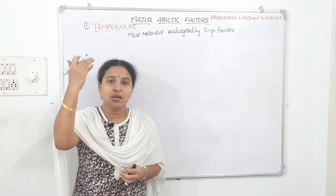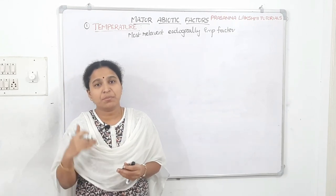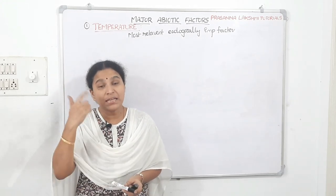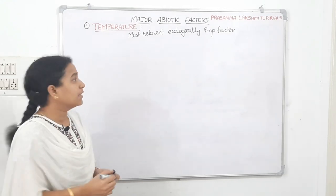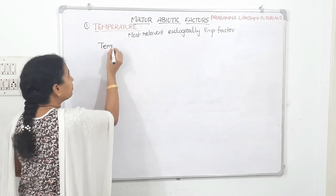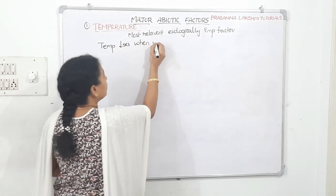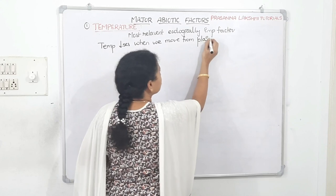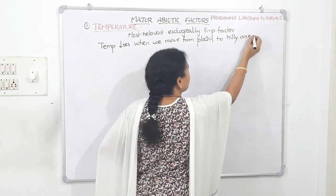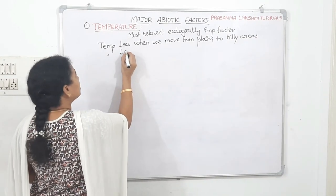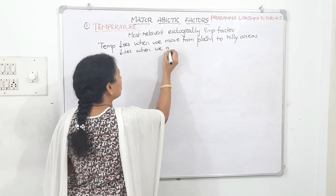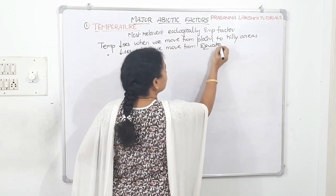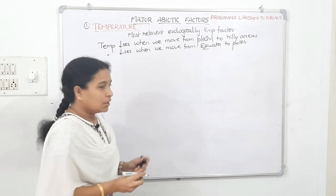How much temperature will be there on the plains, at the mountains, at the equator, at the poles? As we go from the equator towards the poles, temperature decreases. In the same manner, when we move from the plains to the hilly areas, temperature decreases again.